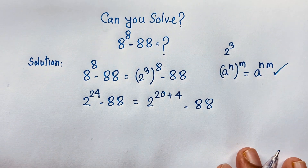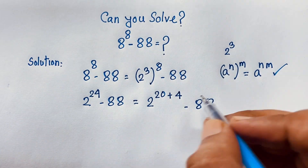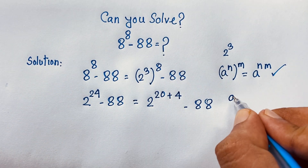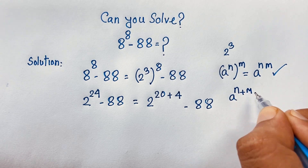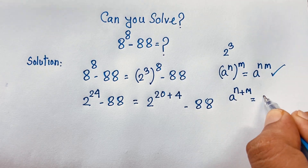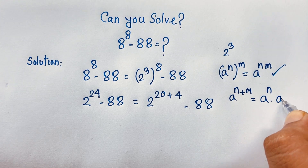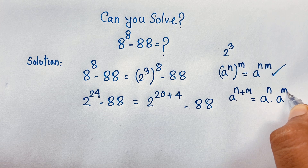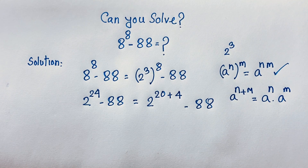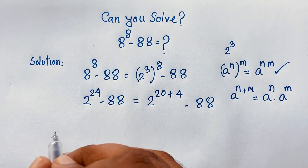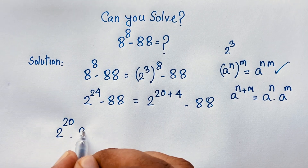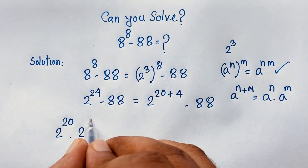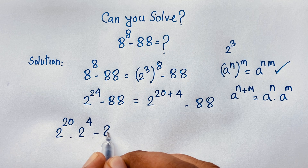Now here, according to the exponential formula, I know that a to the power n plus m it will be a to the power n times a to the power m. I solve this question step by step. Then here 2 to the power 20 times 2 to the power 4, minus 88.